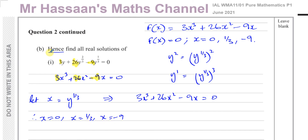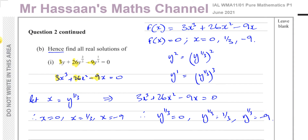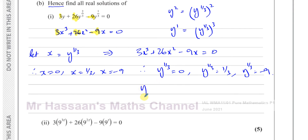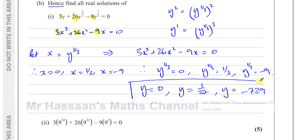We don't need to solve again — we just equate y^(1/3) to each solution and cube both sides to find y. Cubing y^(1/3) = 0 gives y = 0. Cubing y^(1/3) = 1/3 gives y = 1/27. Cubing y^(1/3) = −9 gives y = −729. So those are the three solutions.